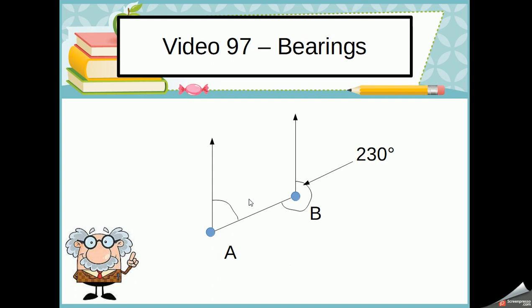However, what if in the exam they don't give you a protractor? It can happen that you're not allowed to use one in a bearings question, in which case you're going to have to use a couple of tricks to work out the angle. In this case, they would have to give you the angle by here somehow, and in our example we know it's 230.